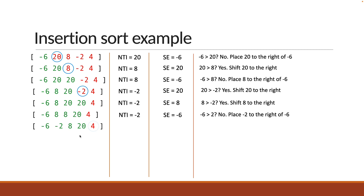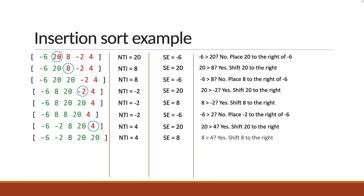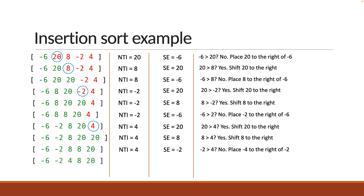Finally, the last unsorted element is 4. Compare again with the sorted part which lies to the left. Is 20 greater than 4? Yes, so shift 20 to the right. Is 8 greater than 4? Yes, so shift to the right. Is minus 2 greater than 4? No, so place 4 to the right of minus 2. Our sorted array is now minus 6, minus 2, 4, 8 and 20. We have reached the end of the array, which means the entire array is now sorted.